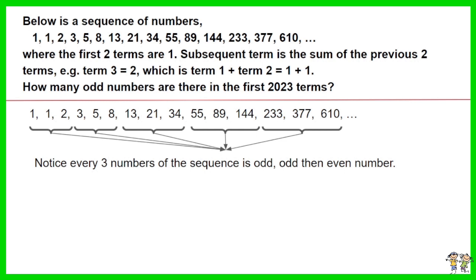Each block of three numbers has two odd numbers. 2023 divided by 3 is equal to 673, with remainder of 1.